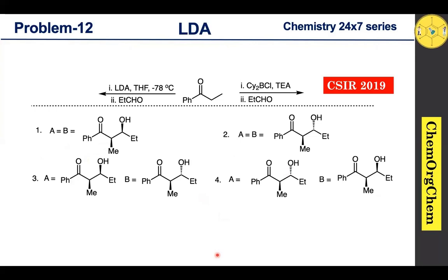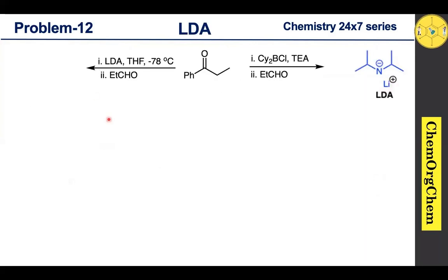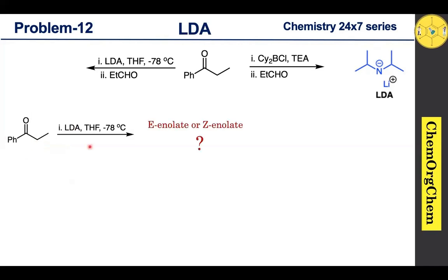Let's solve this together. The first reaction condition is LDA, which we have already discussed on our channel — you can find the link in the description box. LDA is one of the non-nucleophilic, sterically hindered, strong bases, which very effectively removes a proton from the sterically less hindered site. In our substrate there is only one such site, so LDA readily takes the proton from that side.